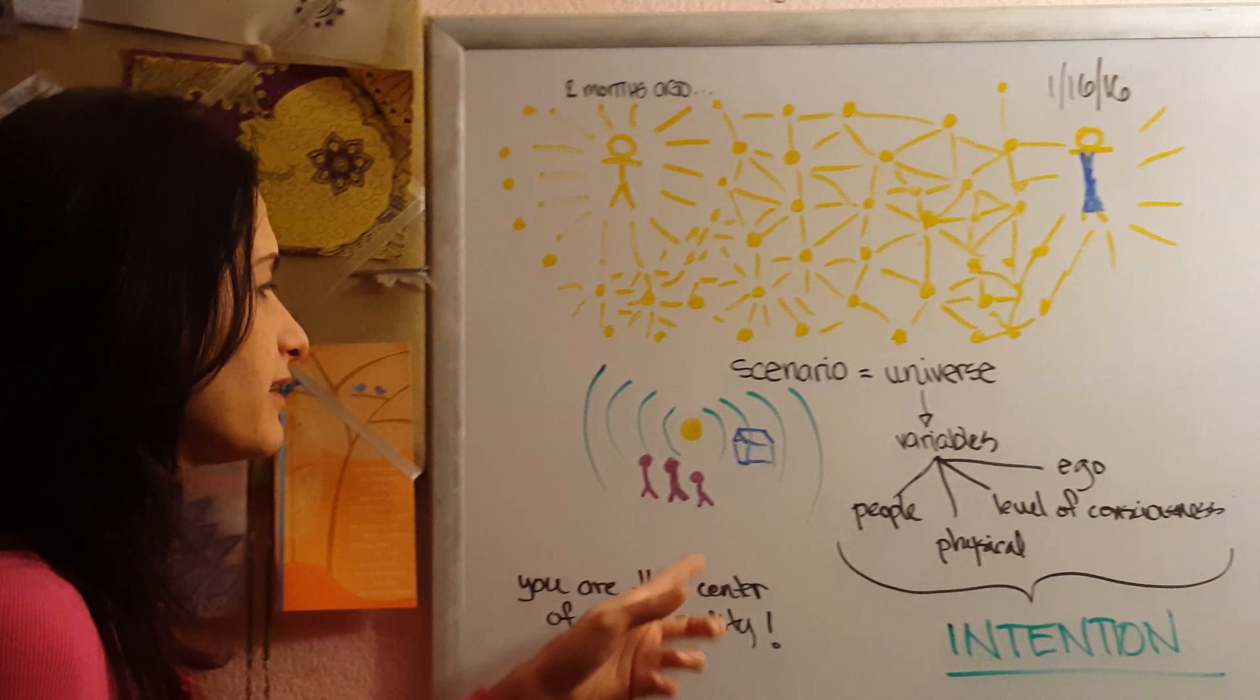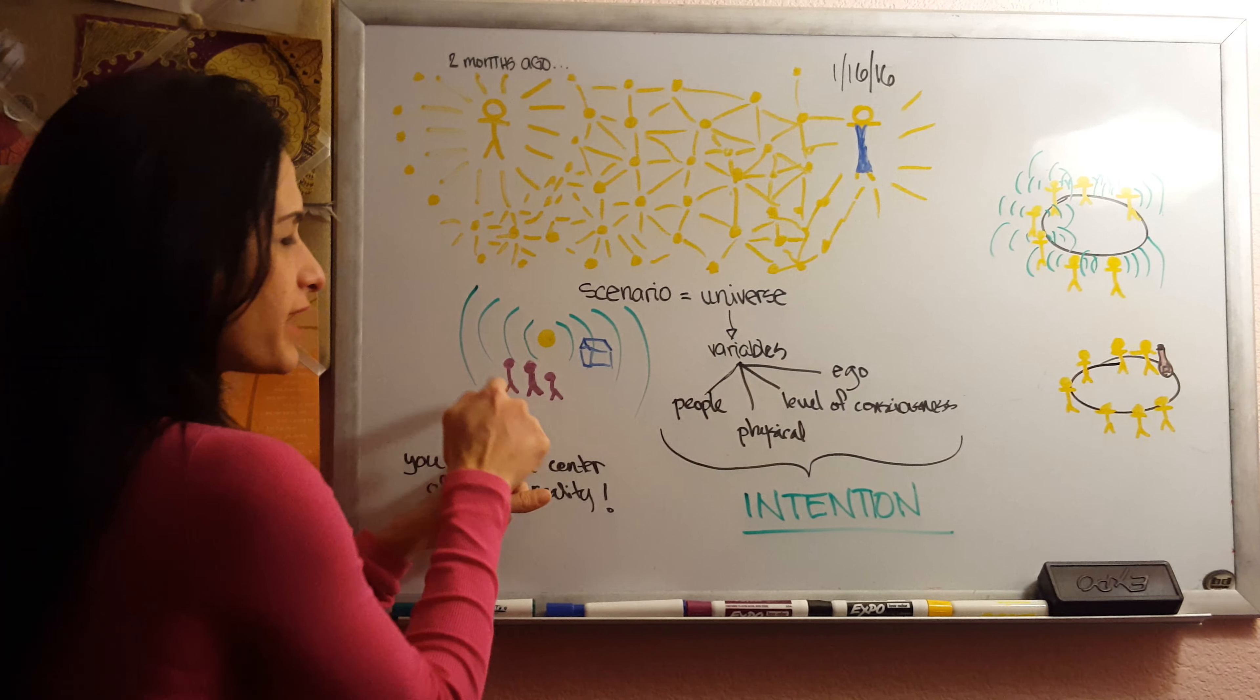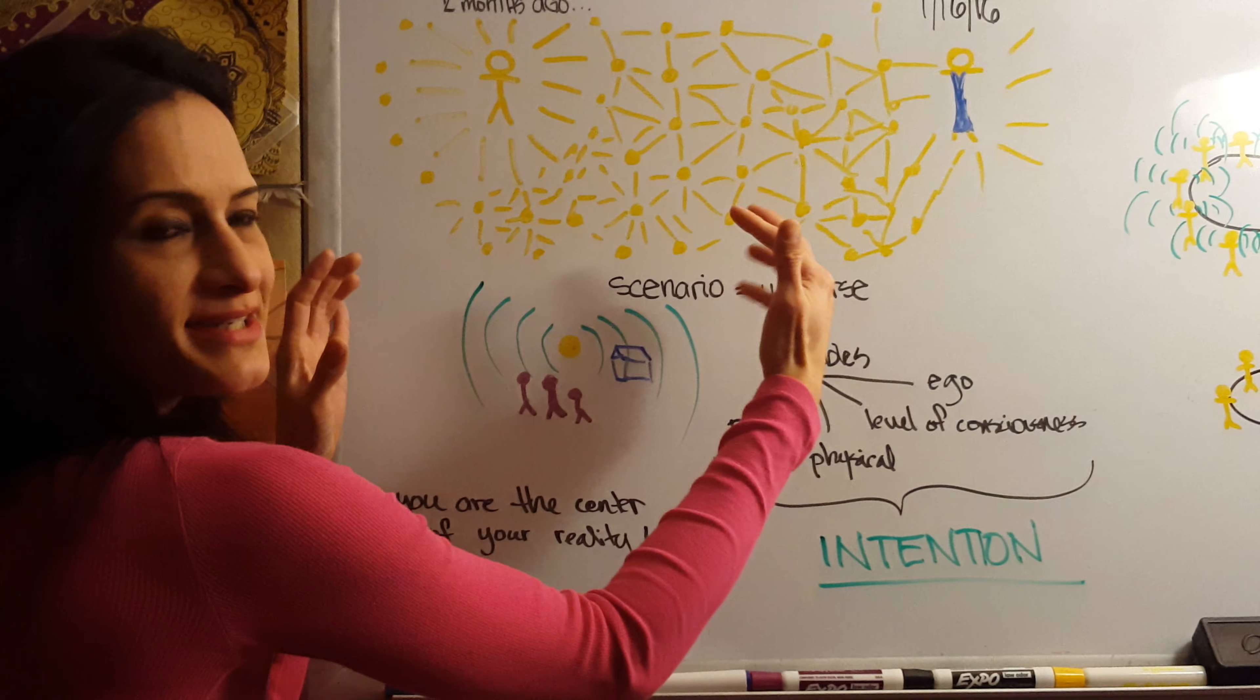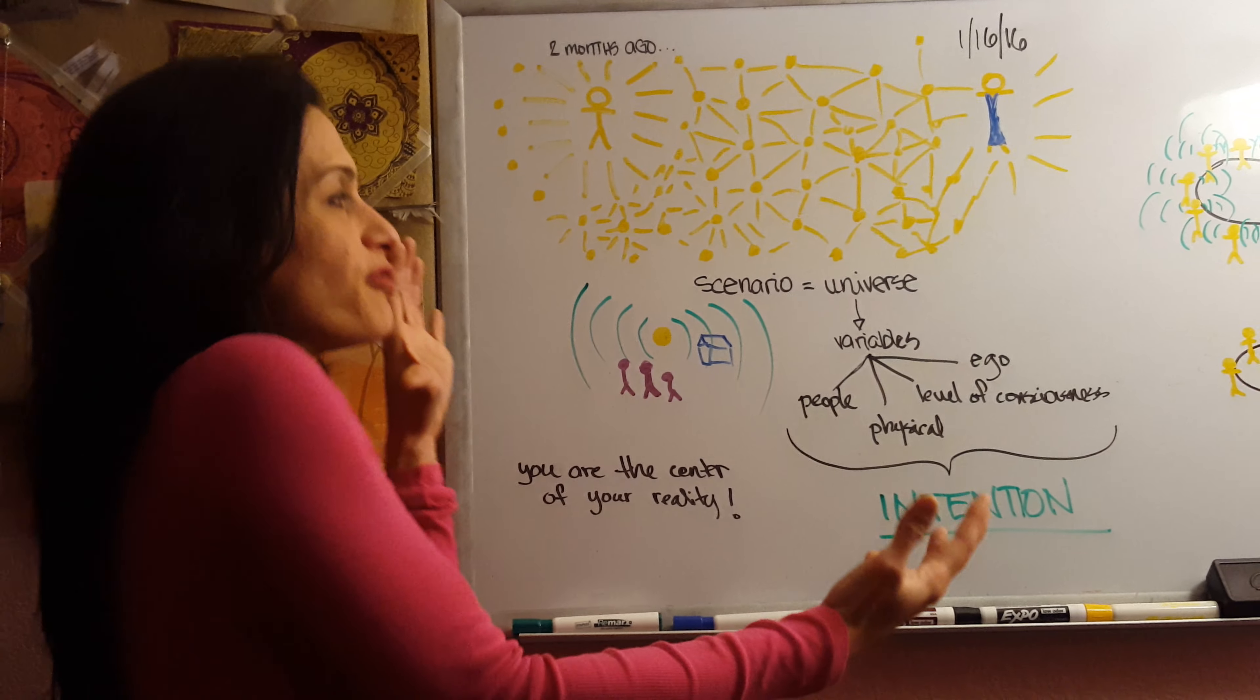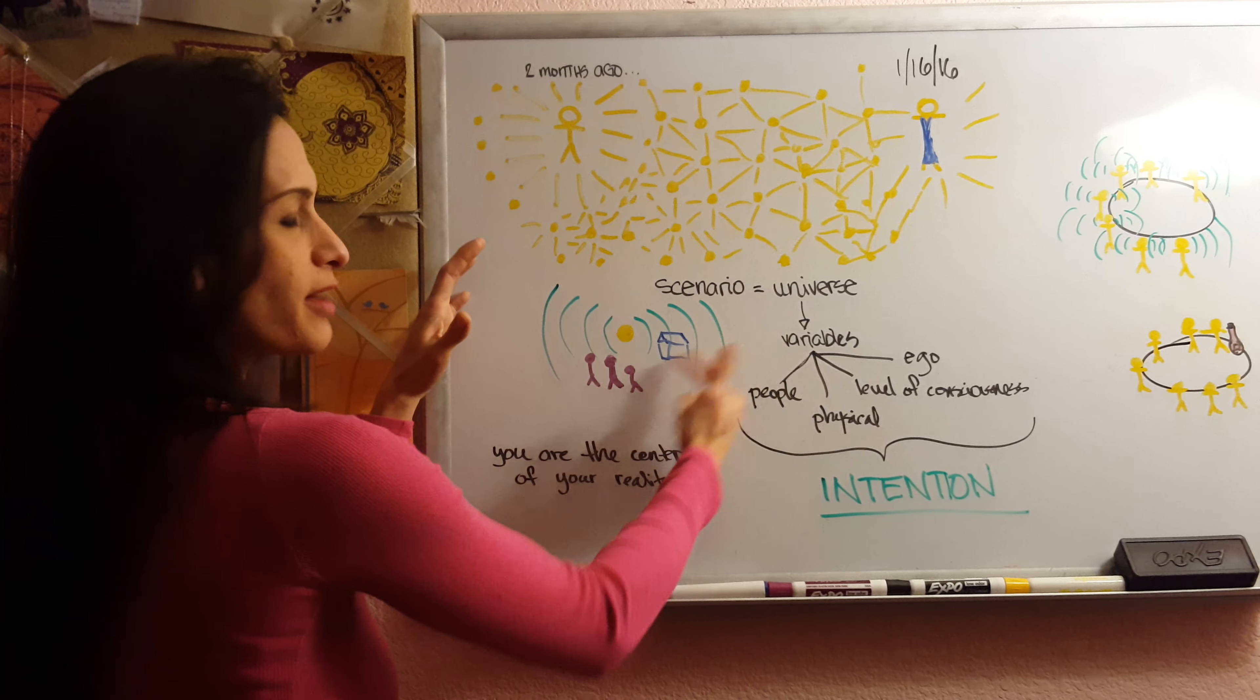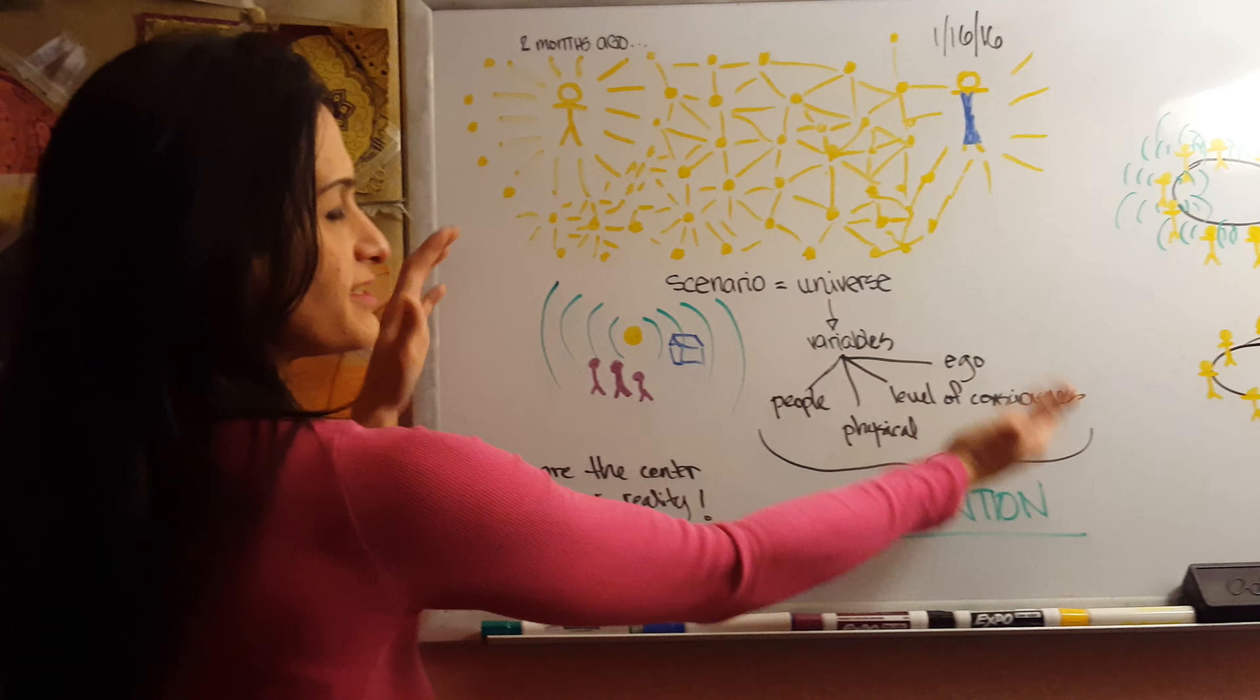So really this is you right here and these are all the different variables, right? And this is your own universe. So when you think about it, you're always in the center of your own universe. The world really does revolve around you. When you think about it, it's your reality revolves around your perception on everything around you, on all these different variables.